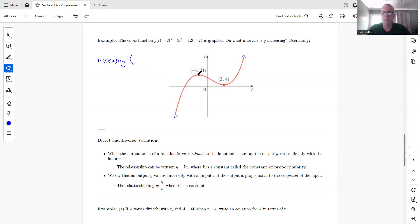So negative infinity to negative one. And then we are also increasing from two to infinity. And then we are decreasing everywhere else, which in this case is only one part. So here we're decreasing from negative one to two.